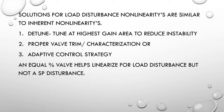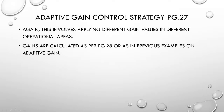We've looked at detuning, valve trim and characterization, and adaptive control strategies. Looking at another adaptive gain control strategy — adaptive gain simply means applying different gain values in different operational areas. The gains are calculated the same way as before, with different lines representing the static gain in different areas. The math specific to this adaptive gain control strategy involves taking zone three plus zone one, then dividing by zone two.